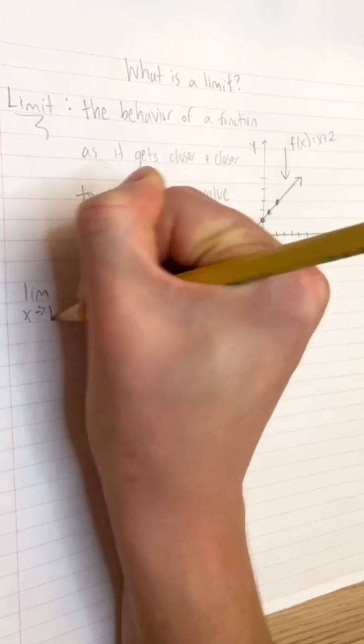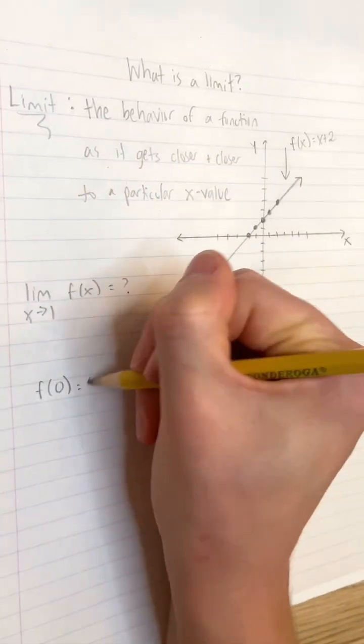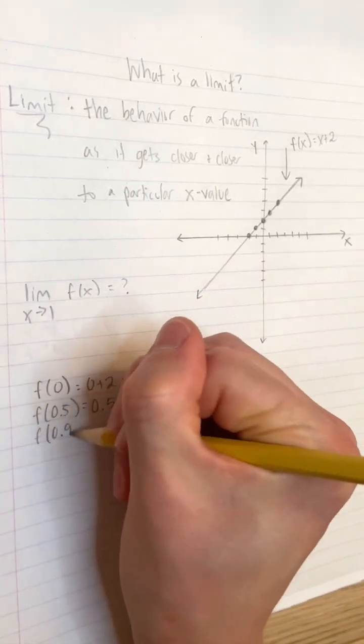As an example, let's find the limit of f of x equals x plus 2 as x approaches 1. One way to do this is to calculate many outputs for inputs around the x value you're interested in.